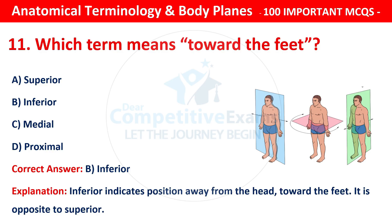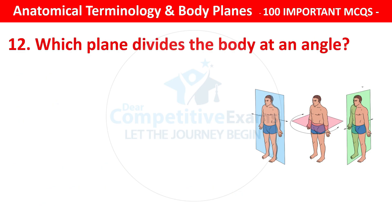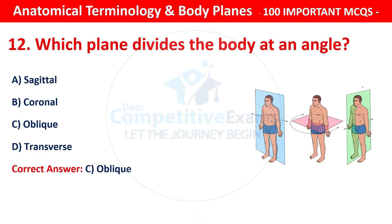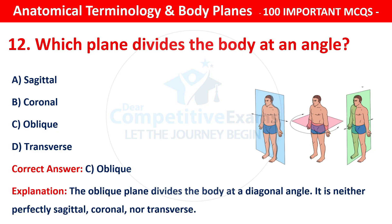Question number 12: Which plane divides the body at an angle? Options are: sagittal, coronal, oblique, or transverse. The correct answer is C — that is oblique. The oblique plane divides the body at a diagonal angle. It is neither perfectly sagittal, coronal, nor transverse.